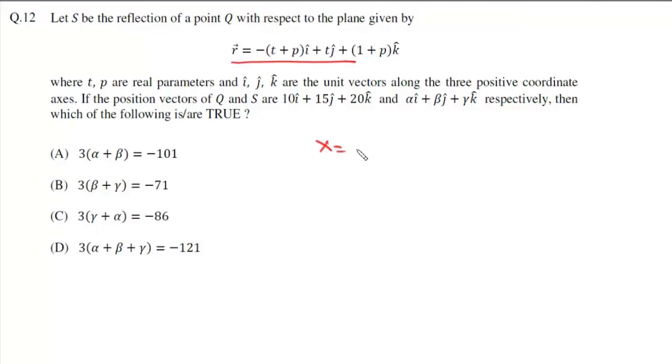Now here x is -t-p, y is t, and z is 1+p. Now if we add them all then from here we'll simply get equation of plane as x+y+z = 1. So we have equation of this plane x+y+z = 1.